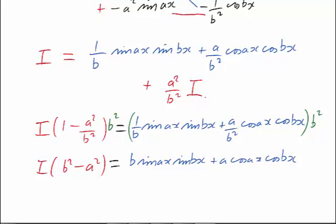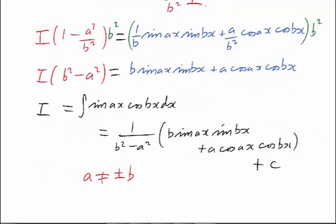And finally, do the division. Once again, the situation where a is equal to plus or minus b is anomalous and has to be treated differently, in fact the same way that we did before.